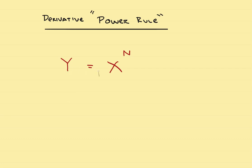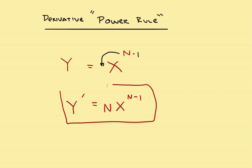The rule reads like this. If the original function is y equals x to the n, then the derivative, given by y prime, would be equal to n times x to the n minus 1. You bring the exponent down in front, then subtract 1 from the original exponent. That is the derivative rule: bring the exponent down in front and reduce the old exponent by 1.